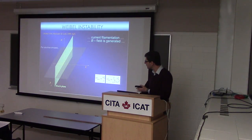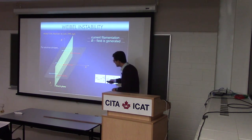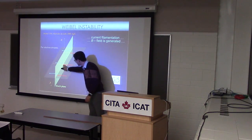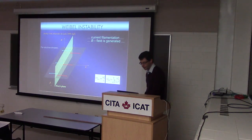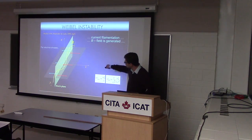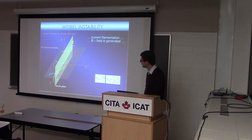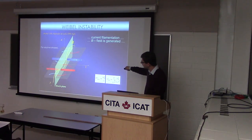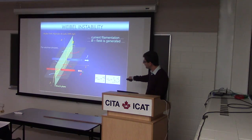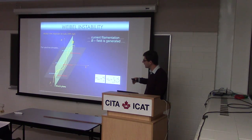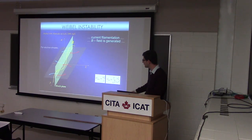The basic instability for unmagnetized flows is called the Weibull instability. If you imagine two flows going through each other and a small fluctuation of magnetic field, that field deflects particles, creating currents that segregate the plasma into chunks. These currents amplify the initial magnetic field perturbation — this is an exponential instability.